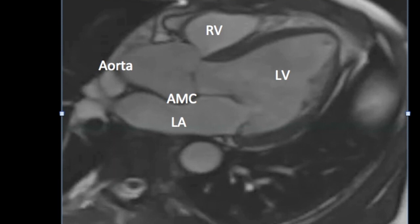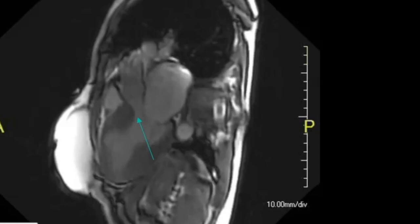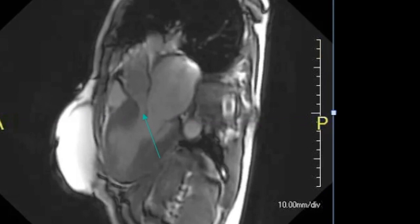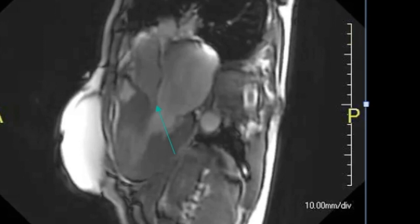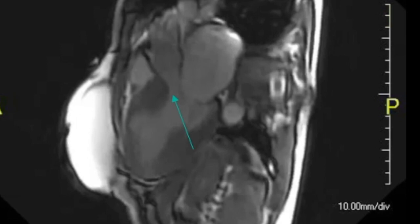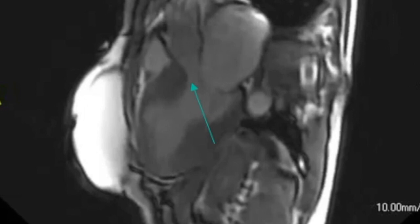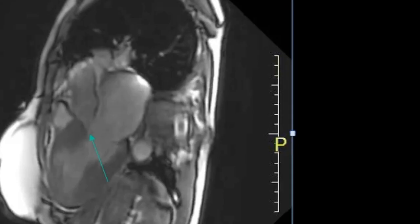I've put up the three-chamber view again to depict the systolic anterior motion in a patient with hypertrophic cardiomyopathy. In this first video or the first cine loop where we see severe left ventricular outflow tract narrowing because of the systolic anterior motion of the mitral leaflet and the basal septal hypertrophy. We can also see flow acceleration in the region of the LVOT. The second patient again has hypertrophic cardiomyopathy with basal septal hypertrophy but there's no SAM and there's no LVOT narrowing or obstruction.